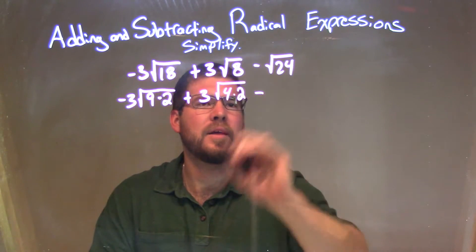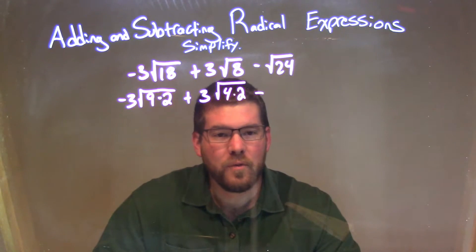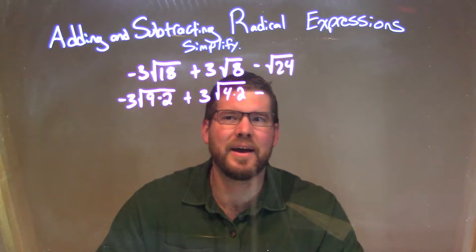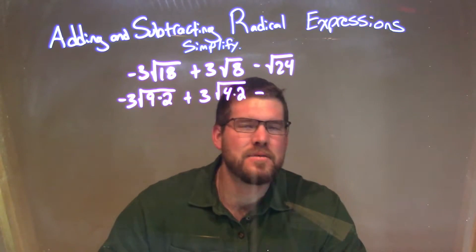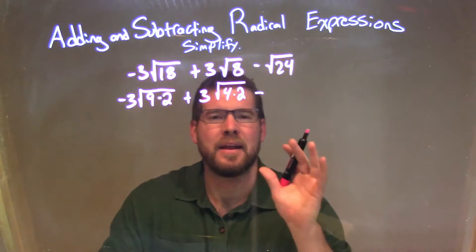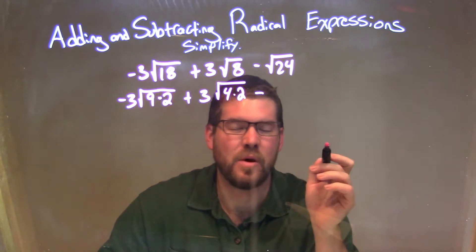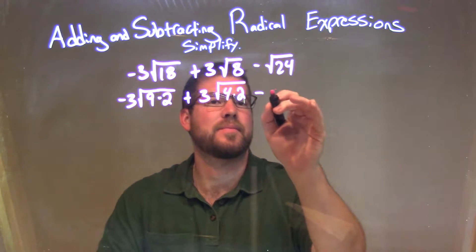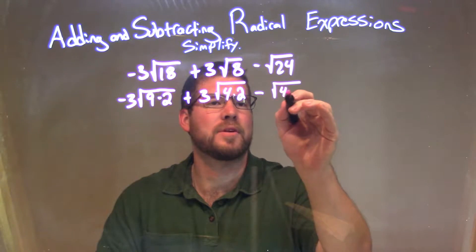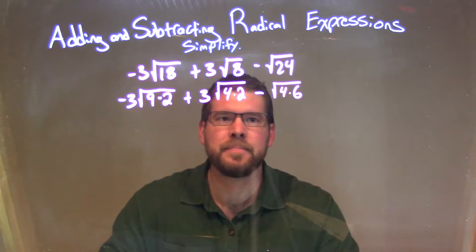And then minus the same thing with 24. I'm thinking about what I can break this down into — if I break it into two numbers where I can easily take the square root of one of them, that's 4 and 6. So I have the square root of 4 times 6 there.